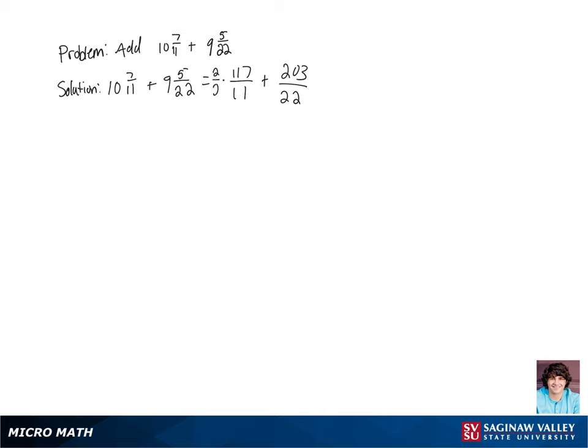Now we're going to multiply 117 elevenths by 2 over 2 to get a common denominator, and then we're going to get 234 over 22 plus 203 over 22.